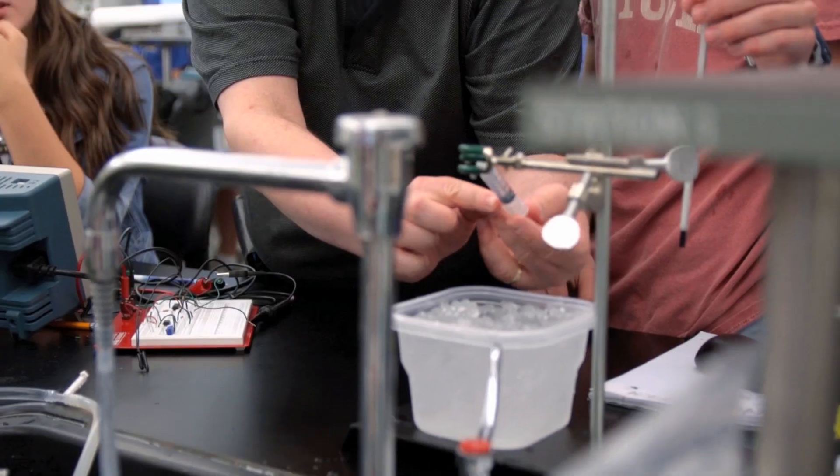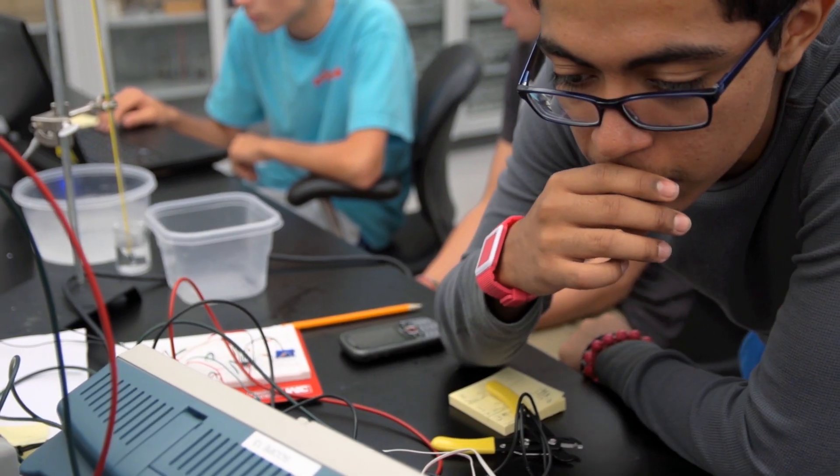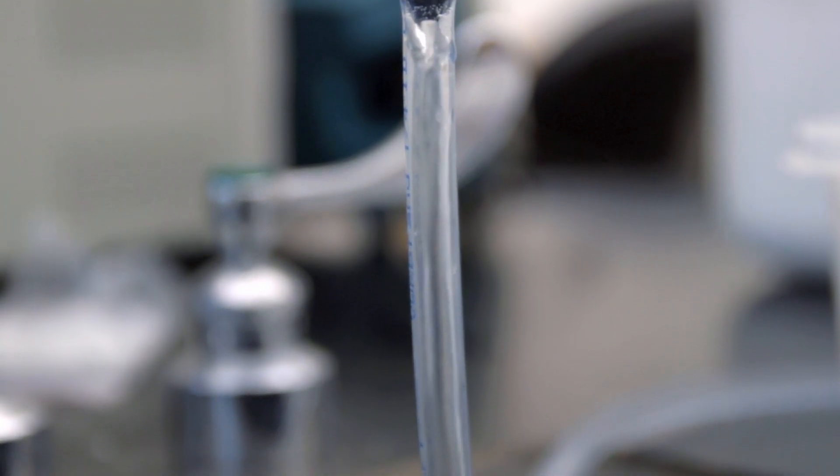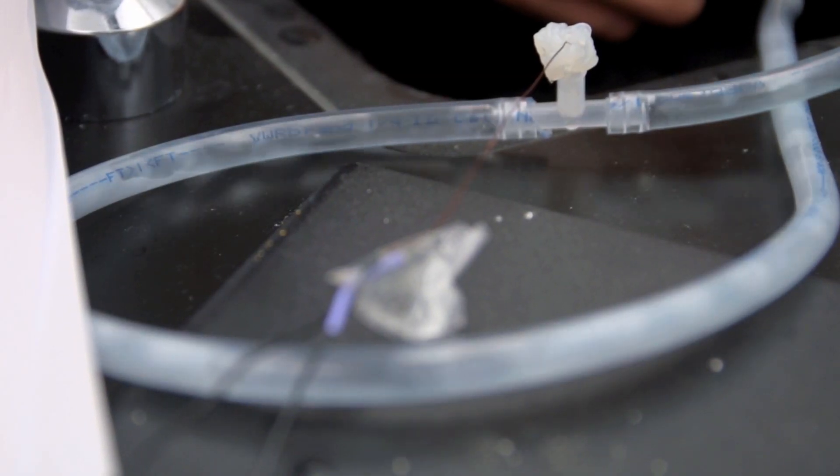We'll be looking at thermistors, which is a device we use to measure temperature, and how thermistors can be used to measure flow, which is the same way that cardiologists may assess how much blood is coming out of your heart.